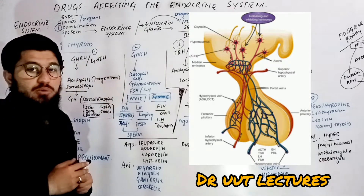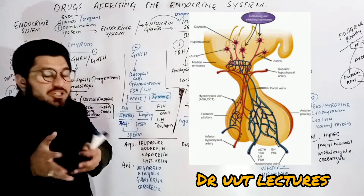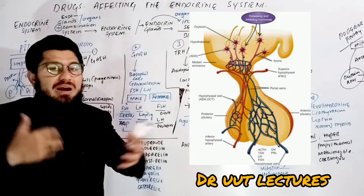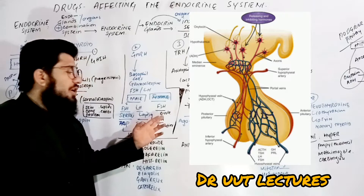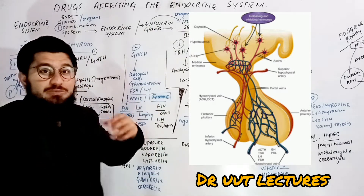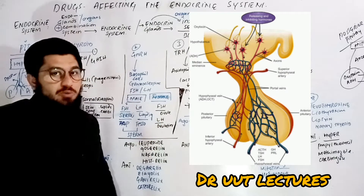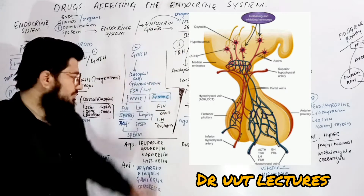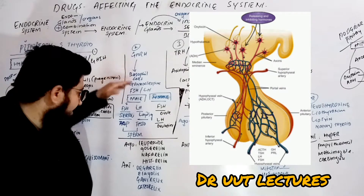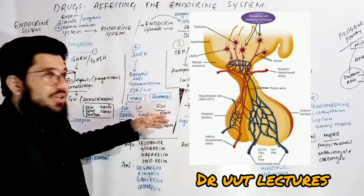In the female, follicle stimulating hormone — as the name tells you — is a hormone that stimulates the follicles to transform their shape from primary to secondary and to become mature. We can say follicle stimulating hormone is responsible for oogenesis, whereas luteinizing hormone is responsible for ovulation. So this is how gonadotropin releasing hormone is responsible for sperm synthesis in males and ovulation and ovule formation in females.